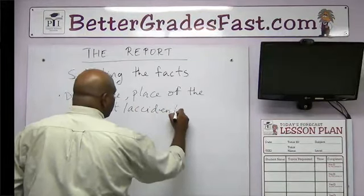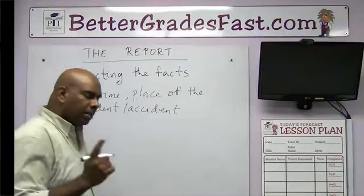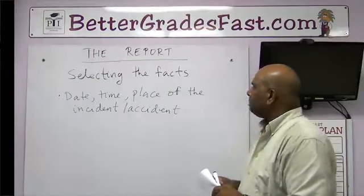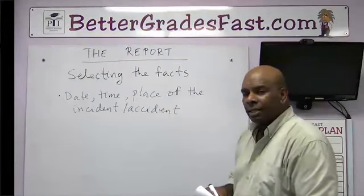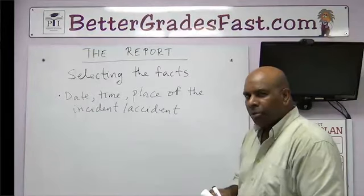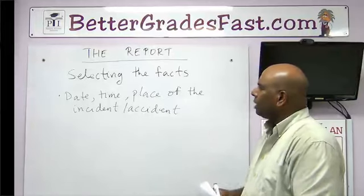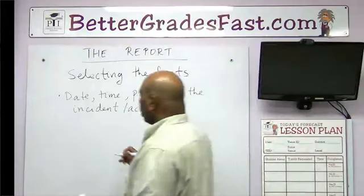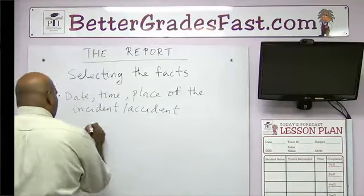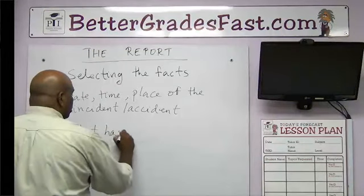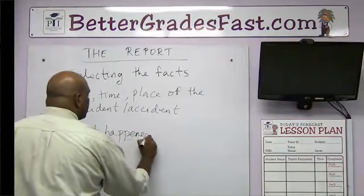Do we have that here? Tell me. Go back and check it. We have our date, time, and place of the incident and accident. I'm sure we do. Check it there. Underline it in your booklets. What else? What was the incident about? What happened? Do we know what happened? Okay.